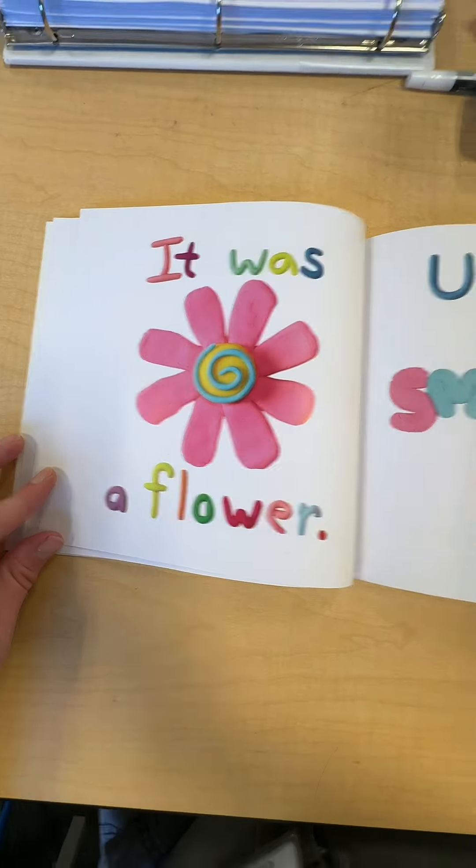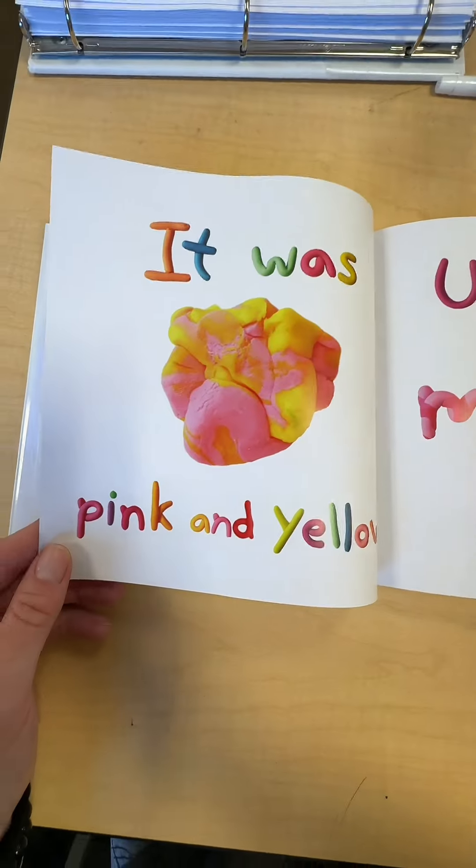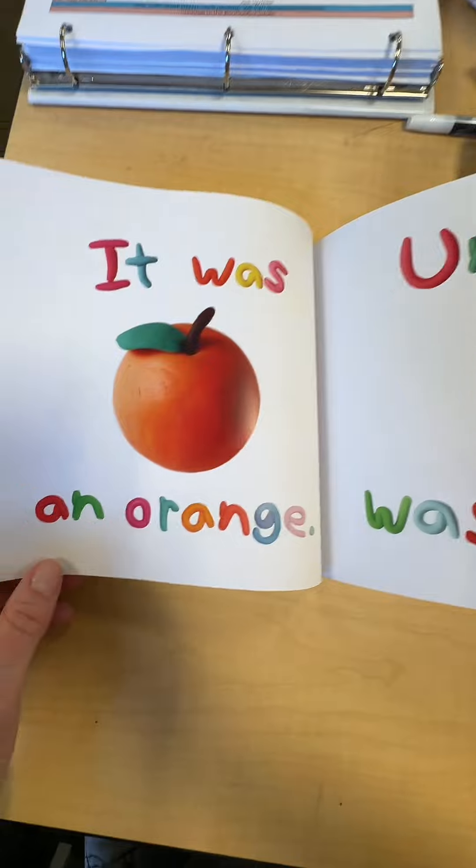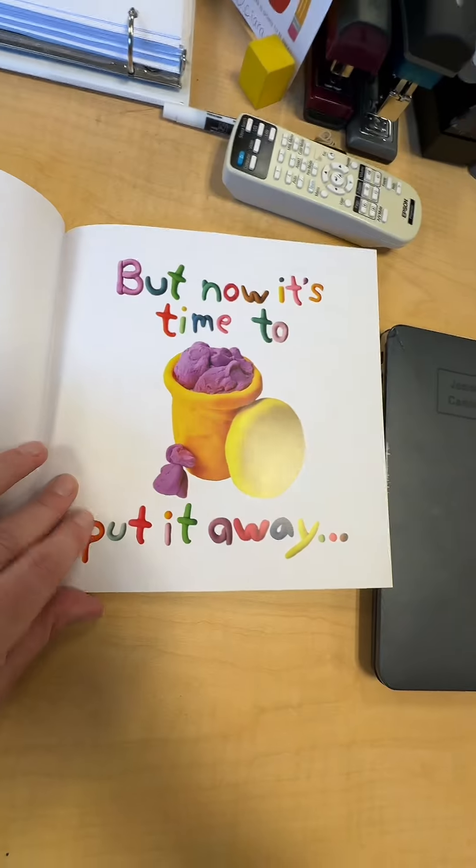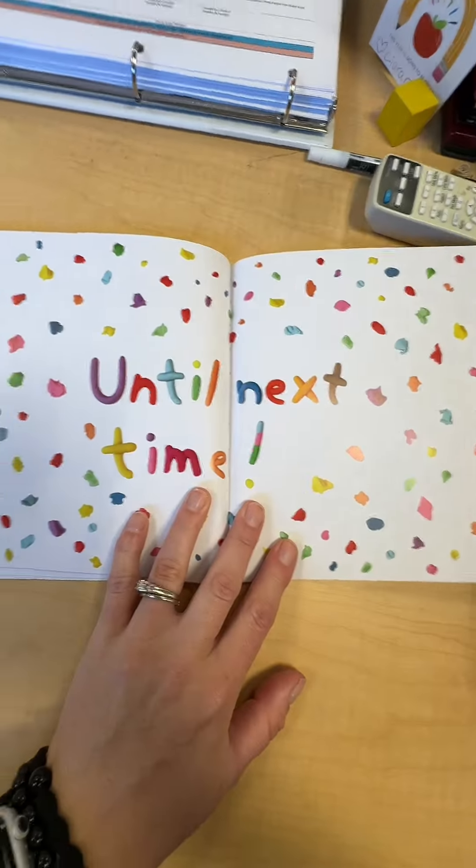It was a flower until I smushed it. It was pink and yellow until I mixed it. It was an orange until it wasn't. It was so many things, but now it's time to put it away. Until next time.